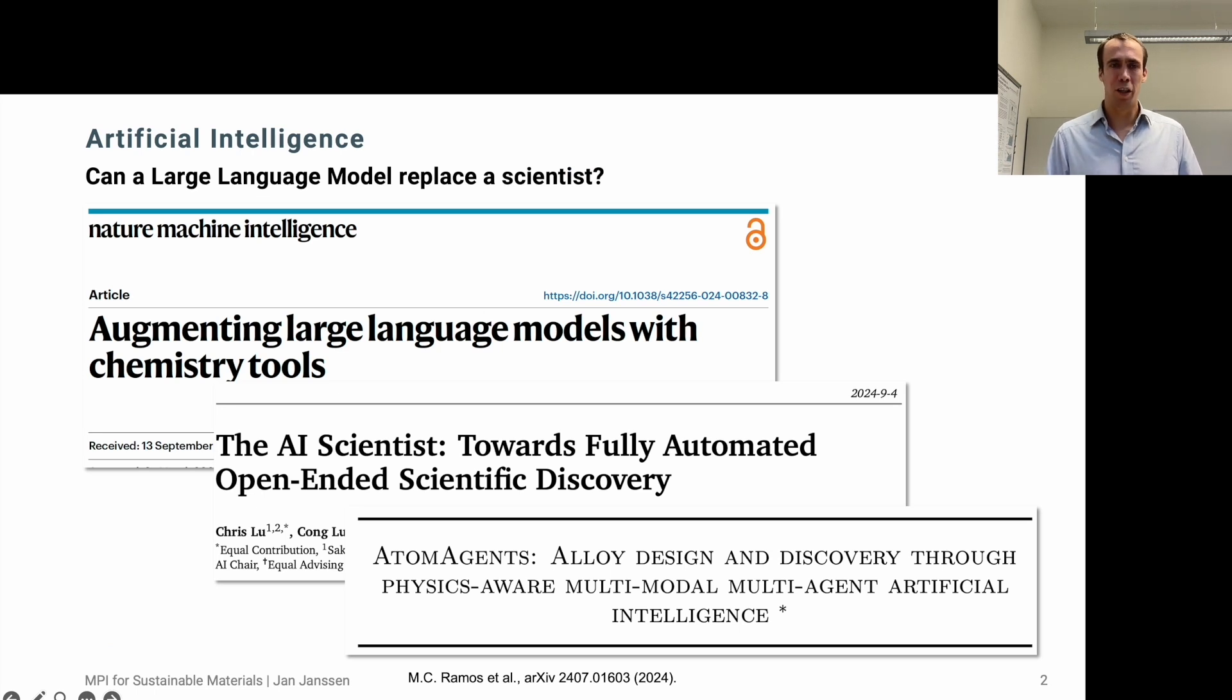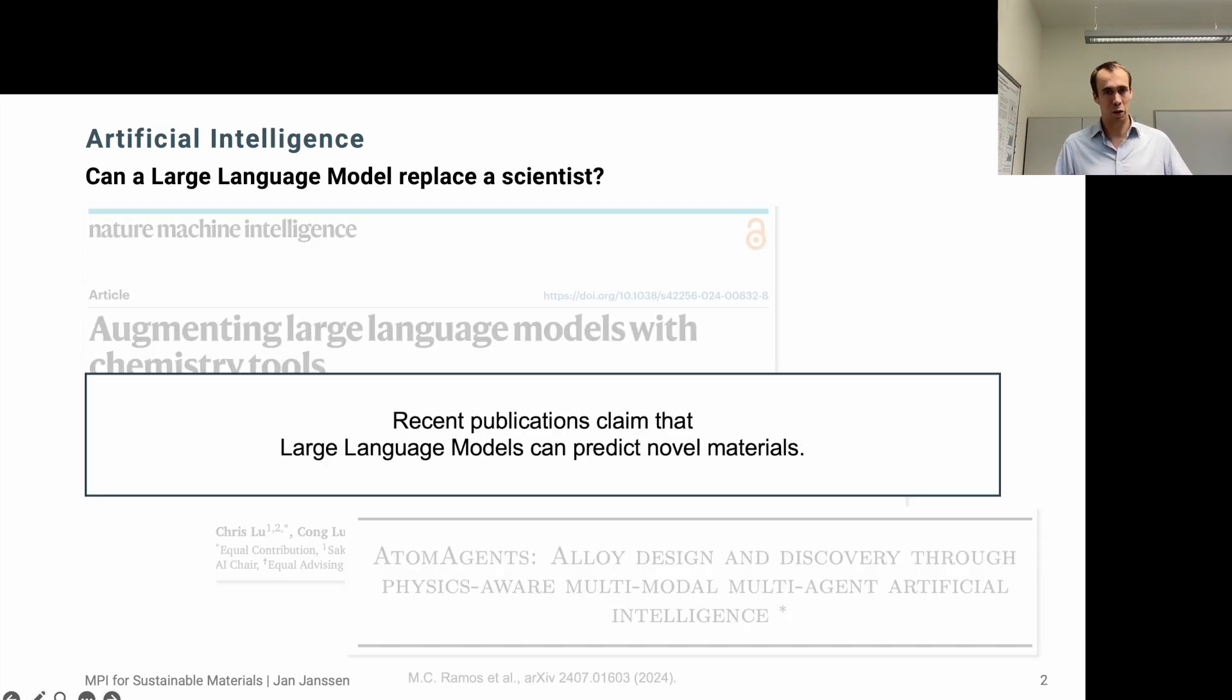When we talk about machine learning, the first thing that comes to mind is the huge success of large language models. Here I highlight three recent publications: augmenting large language models with chemistry tools, the AI scientist with fully automated open-ended scientific discovery, and atom agents alloy design discovery through physics-aware multi-modal multi-agent artificial intelligence. This really raises the question: can a large language model replace a scientist? I would say if this were the case, we would see new materials being discovered more or less on a daily basis. So as we don't see this, there still seems to be something missing.